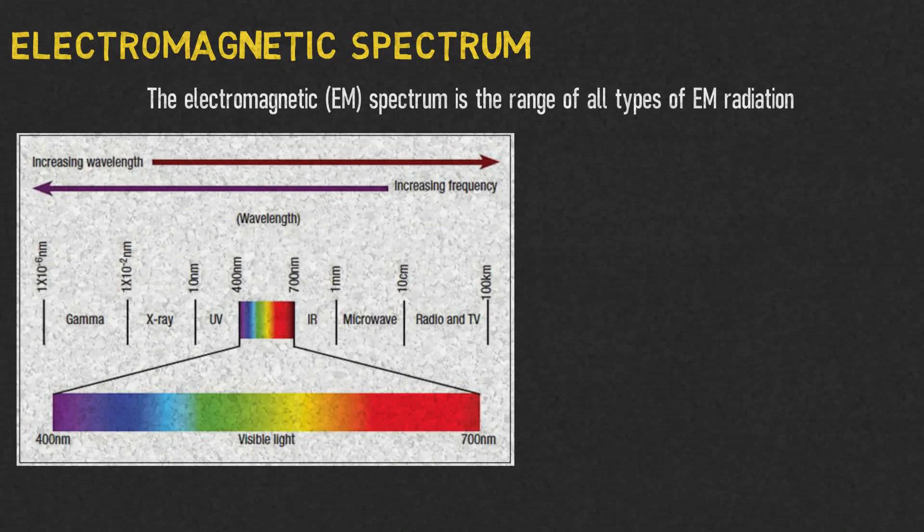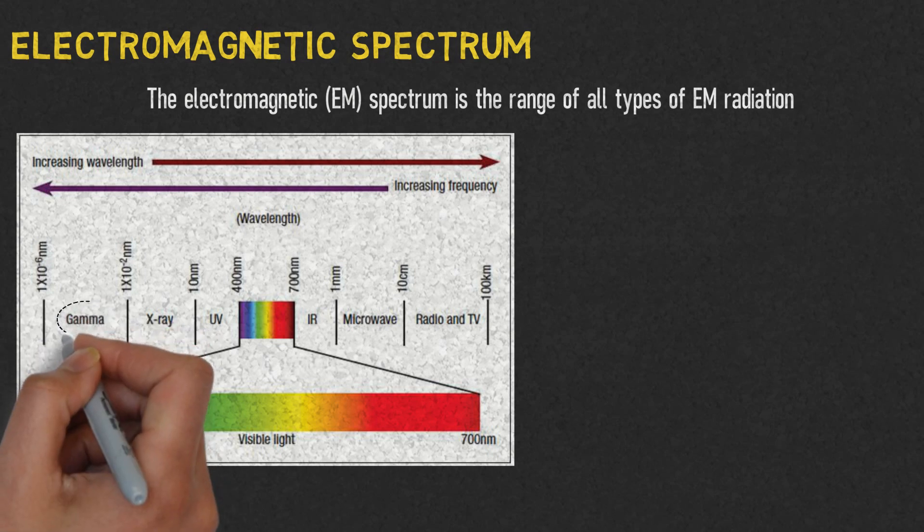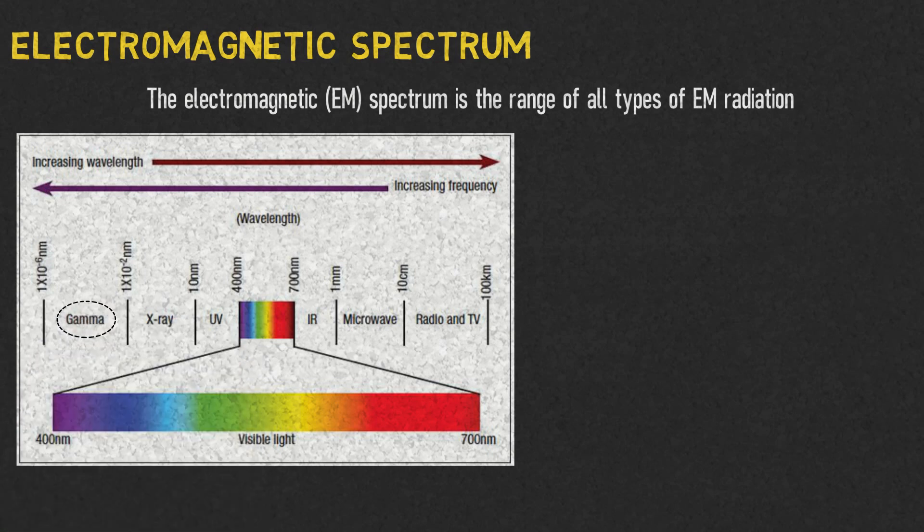From this image, we can see the electromagnetic radiations with their respective wavelengths. Gamma rays: 10 to the minus 6 nanometers to 10 to the minus 2 nanometers.